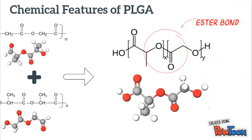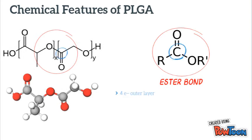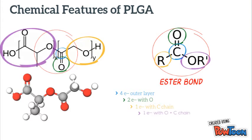In this bond, the carbon atom, which has four electrons in the outer layer, shares two electrons with an oxygen atom, another one with a carbon chain, and the last one with an oxygen atom linked to a carbon chain. This ester group is what helps PLGA to degrade.